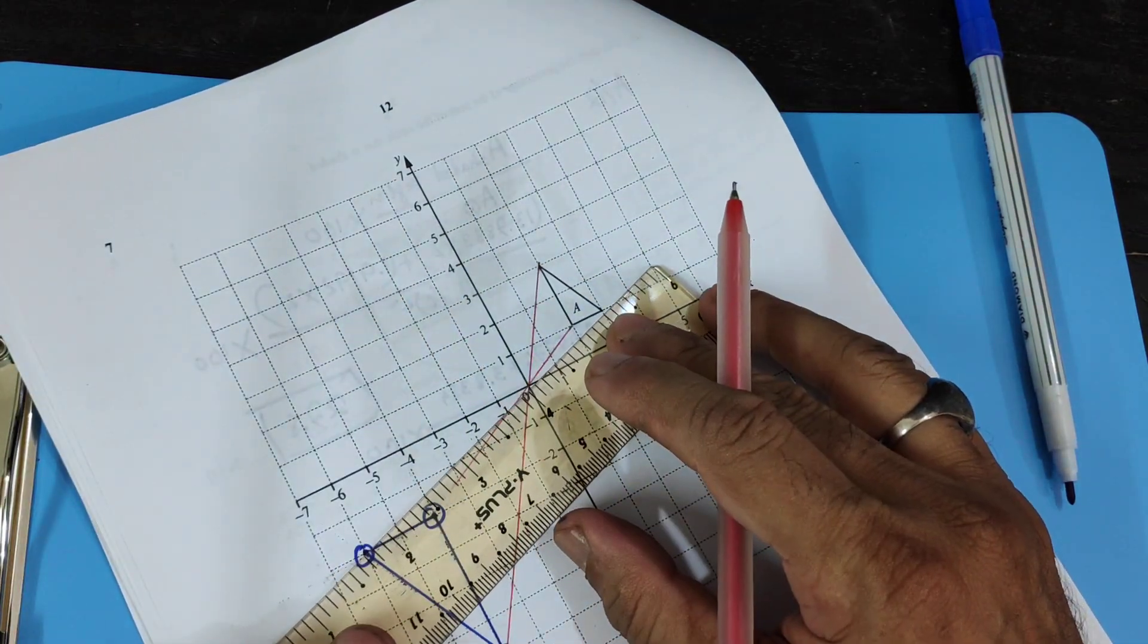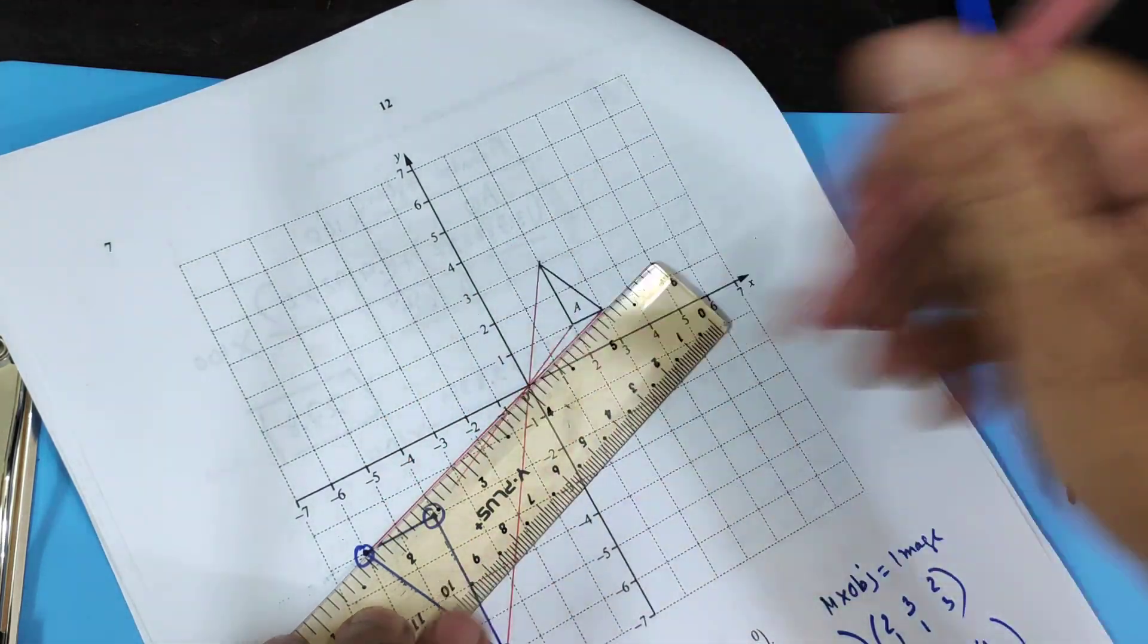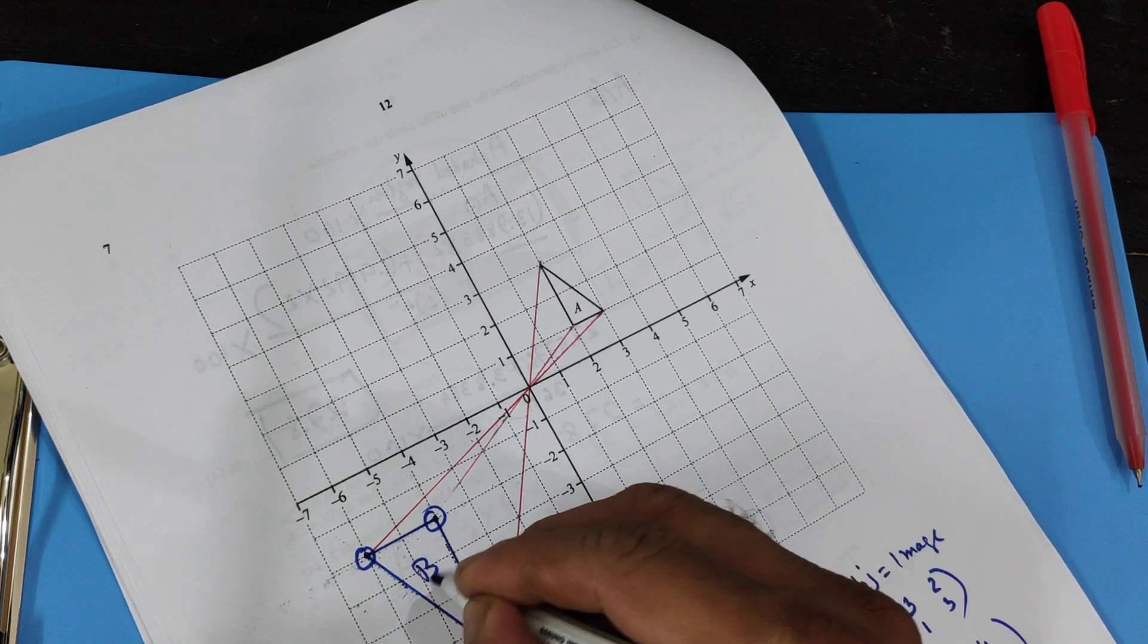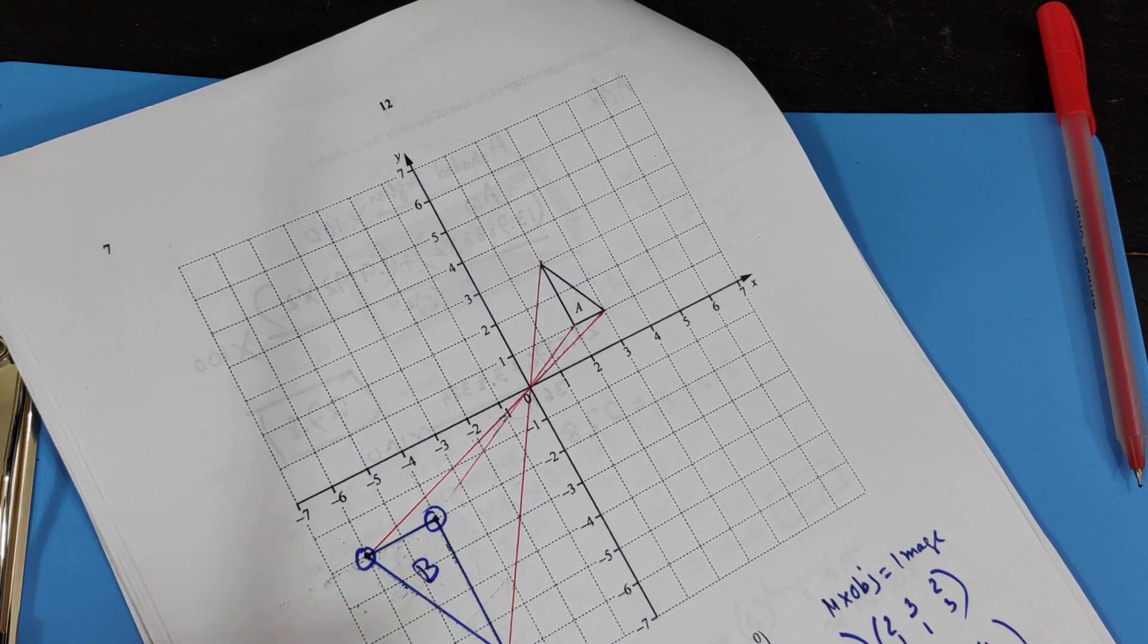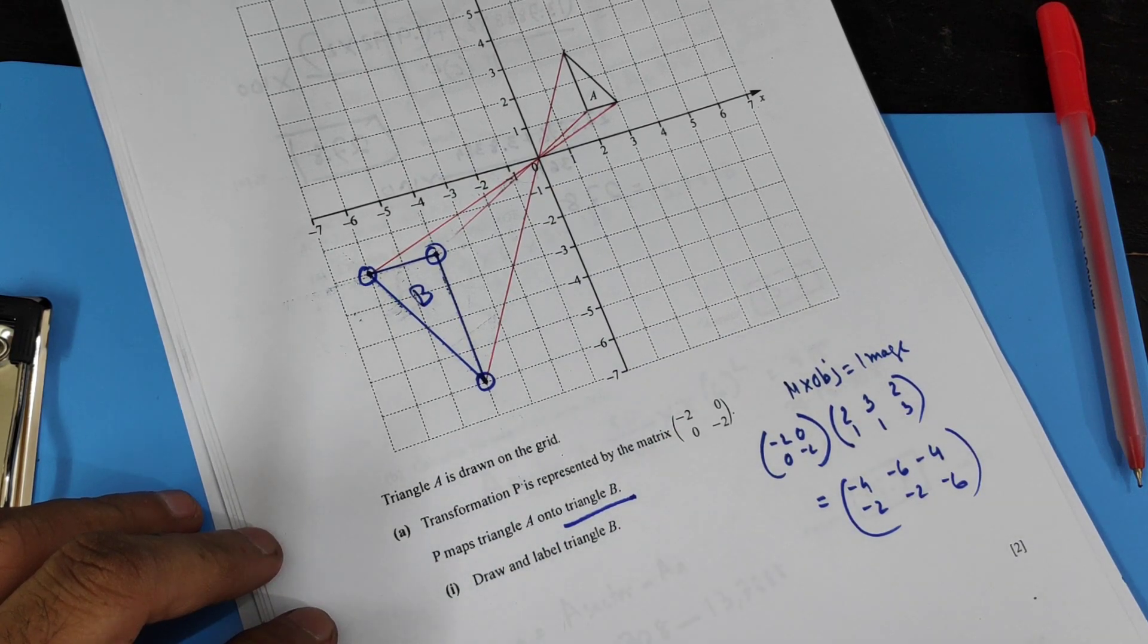Okay, you don't need to do this when you multiply and do that. That's done. And this is my B. Draw and label triangle B. Here, draw and label triangle B is done.